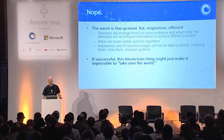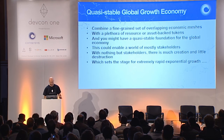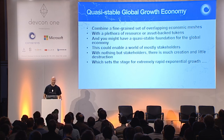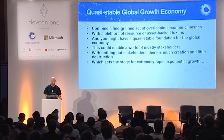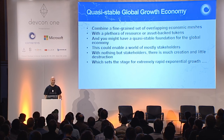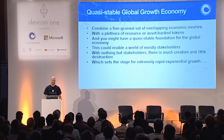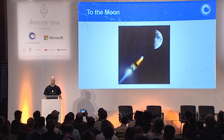So if successful, this blockchain thing might just make it impossible to take over the world. If we combine a fine-grained set of overlapping economic meshes with a plethora of resource or asset-backed tokens, you might just have a quasi-stable foundation for a global economy. This could enable a world of mostly stakeholders — and with nothing but stakeholders, there's much creation and little destruction, which sets the stage for extremely rapid exponential growth to the moon.